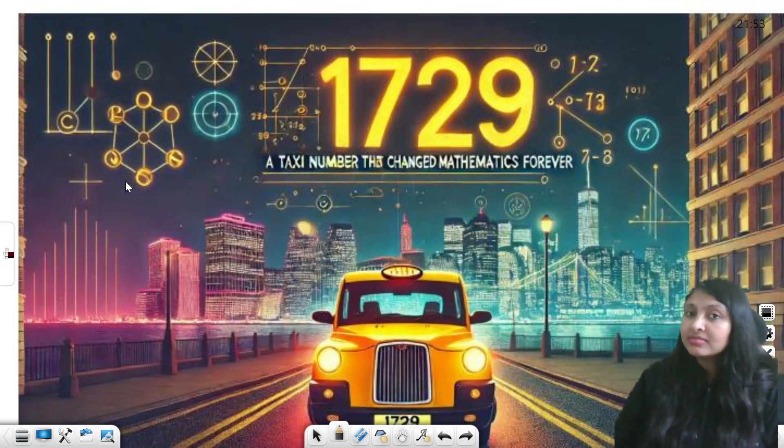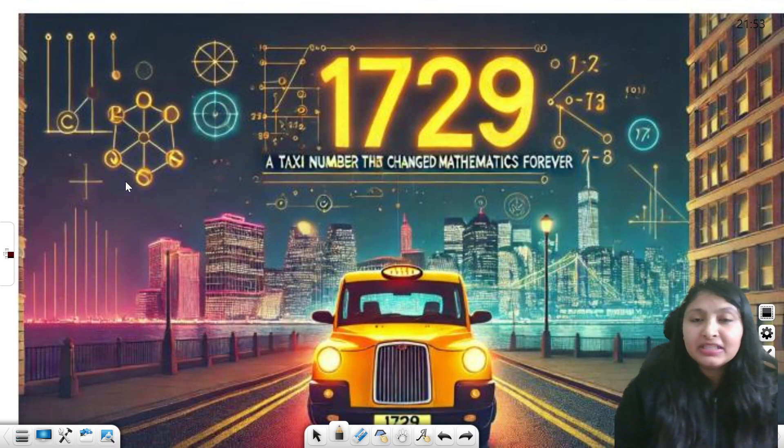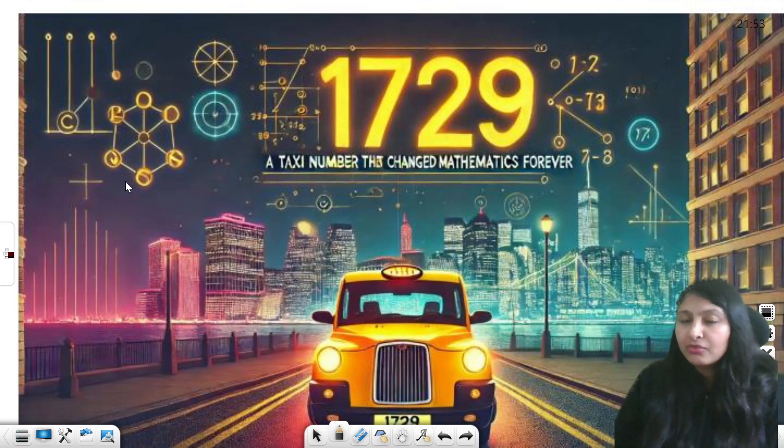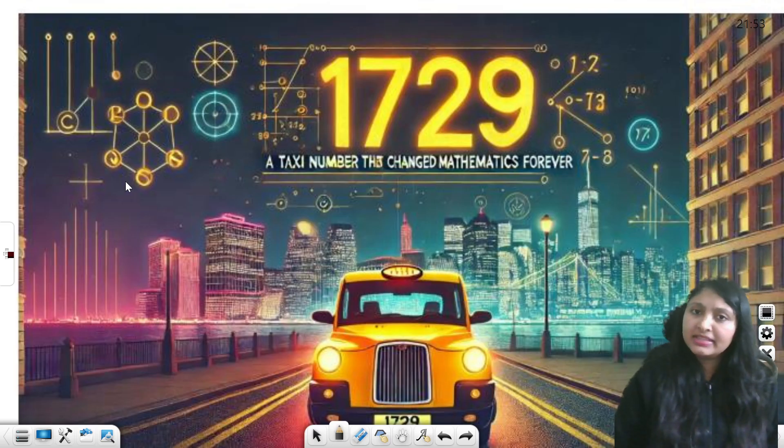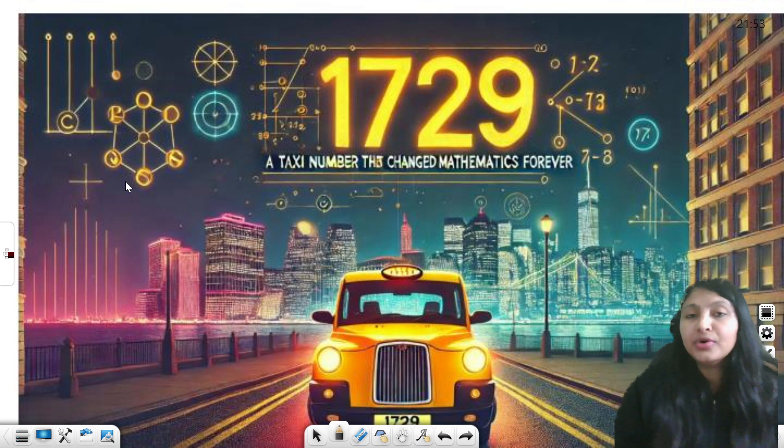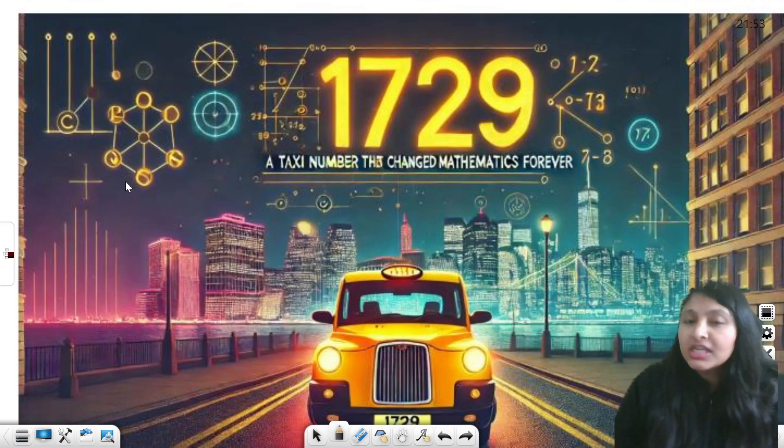Ramanujan was listening. He, being a genius mind, thought about it for a few seconds and then he said no Hardy, it is a very interesting number. He said okay, how? So Ramanujan said this is the smallest number which can be expressed as the sum of cubes of two numbers, that too in two different ways.